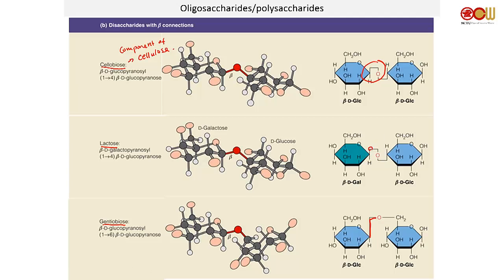Don't get confused by the representation. This does not mean there are two carbons here. This is just the textbook's way of showing that the bond points up — some textbooks use a curved O instead. The anomeric carbon going to the OH is just one bond, not many bonds.